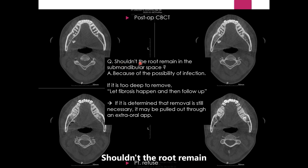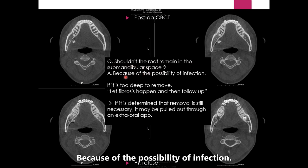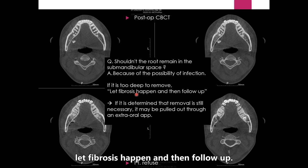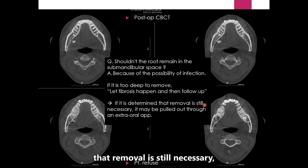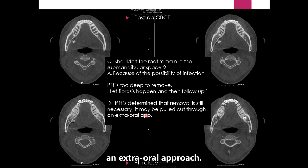Shouldn't the root remain in the submandibular space? Because of the possibility of infection, it cannot be left. If it is too deep to remove, let fibrosis happen and then follow up. If it is determined that removal is still necessary, it may be pulled out through an extraoral approach.